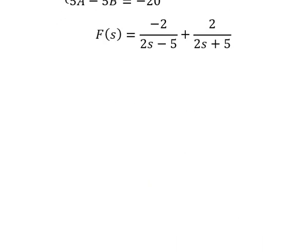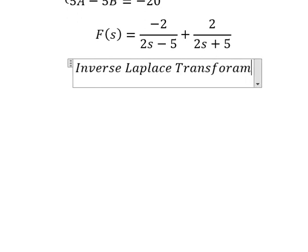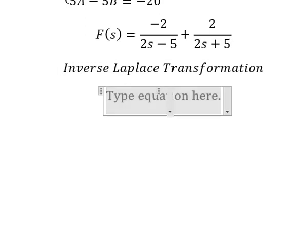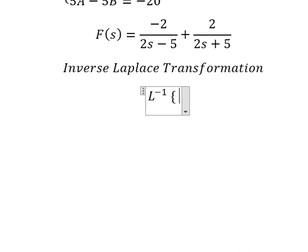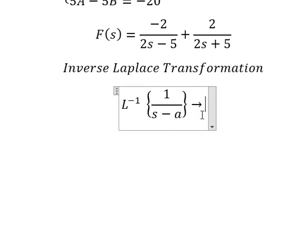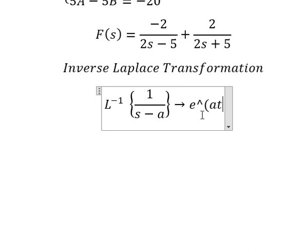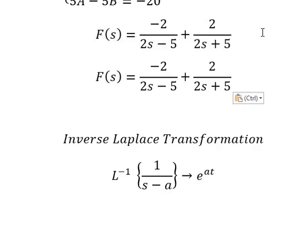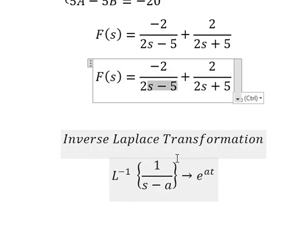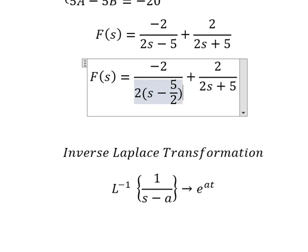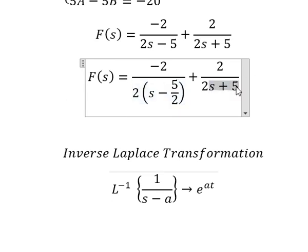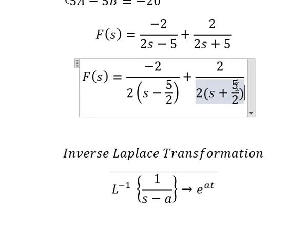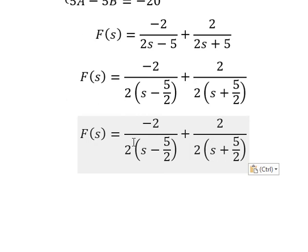Now we need to apply the inverse Laplace transformation. We use the formula: the inverse Laplace of 1 over (s minus a) equals e to the power of at. We factor out 2 from both denominators and simplify the 2s, leaving us with the standard form ready for the inverse transform.